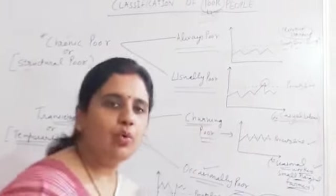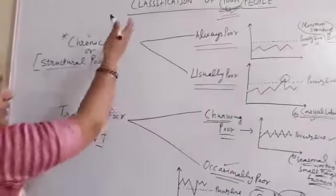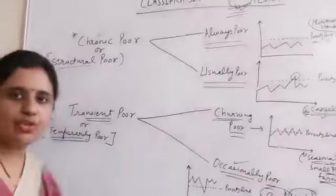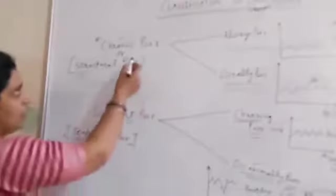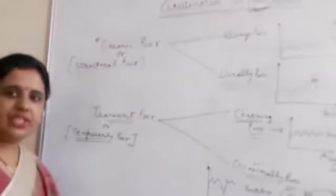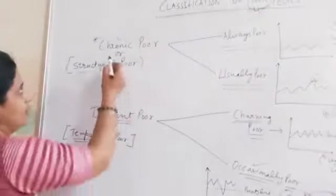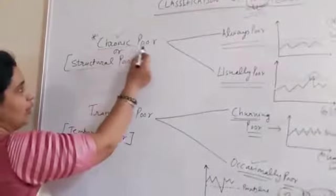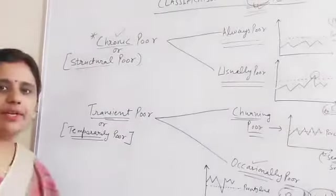Now let us understand the classification of poor people. There are two major categories of poor: first is chronic poor and second is transient poor.